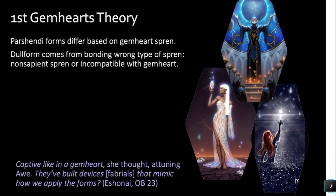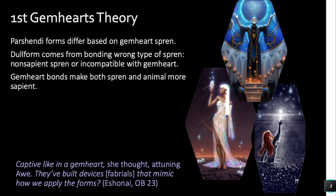We also know that dull form comes from bonding the wrong type of spren — I believe this is from Eshonai as well. My conjecture is that it comes from bonding non-intelligent forms of spren, or bonding something specifically incompatible with the Parshendi Gemheart. Gemheart bonds, based on the books and Brandon's words, make both the spren and the animal more intelligent and more sapient. There's a symbiotic relationship described between the animal and the spren, which has been pretty much confirmed explicitly by Brandon.